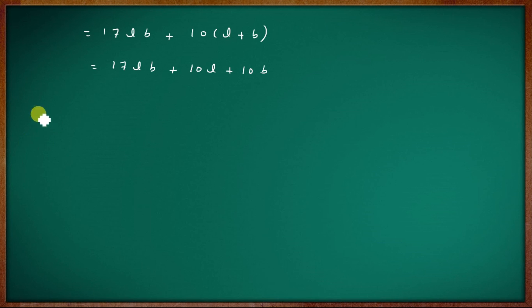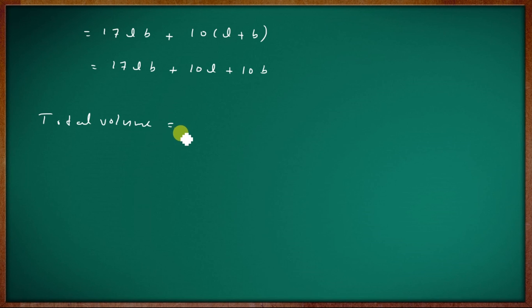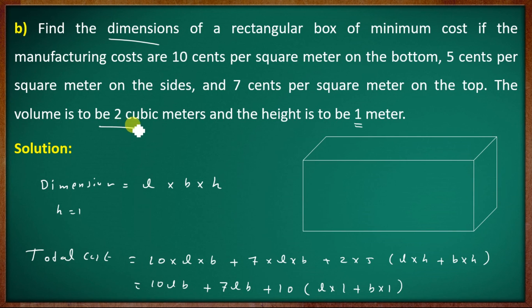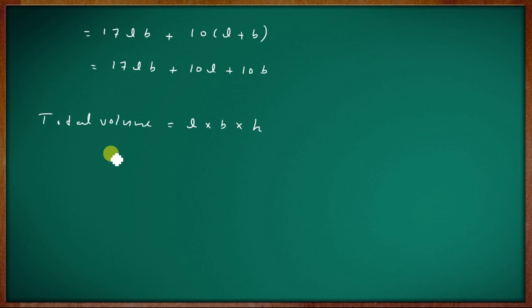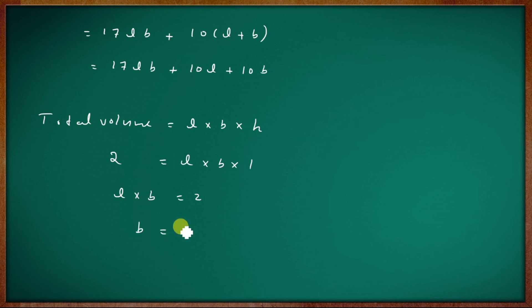The total volume of the rectangular box is length × breadth × height = 2. Since h = 1, we get L × B = 2, so B = 2/L.